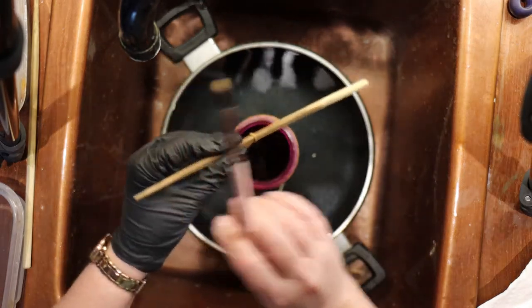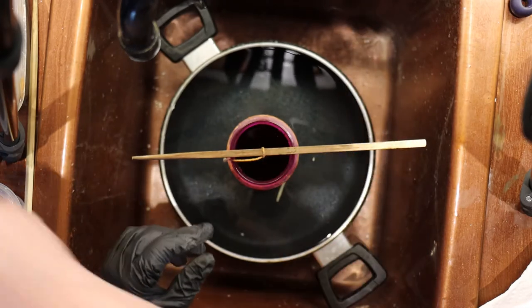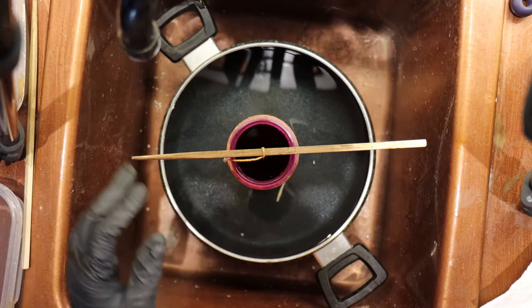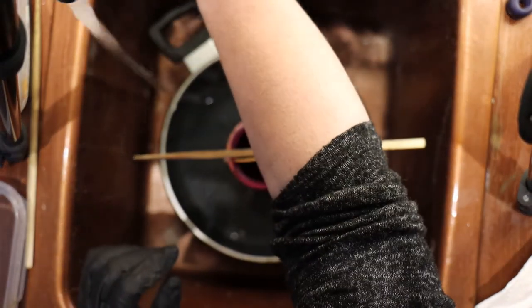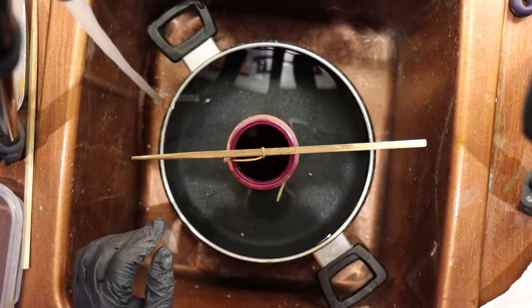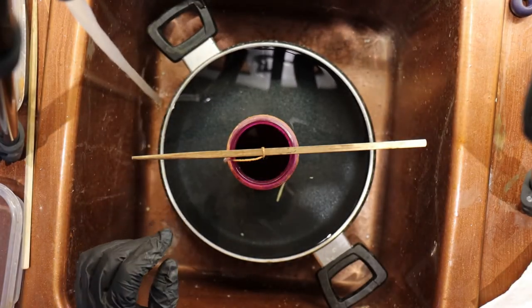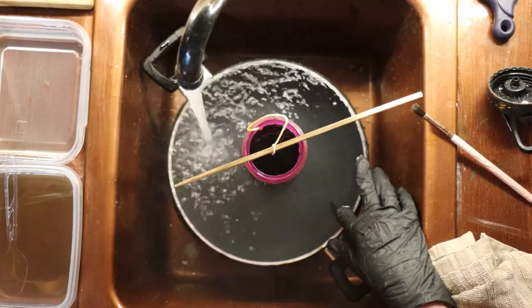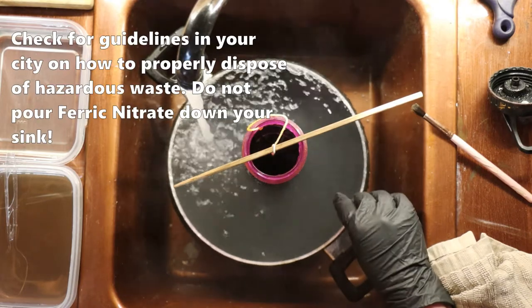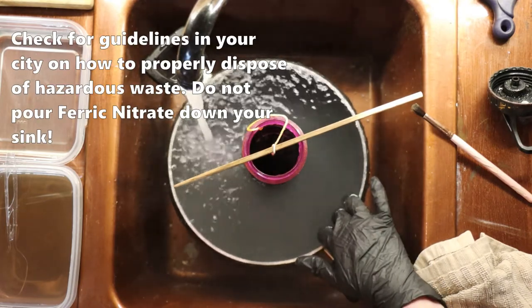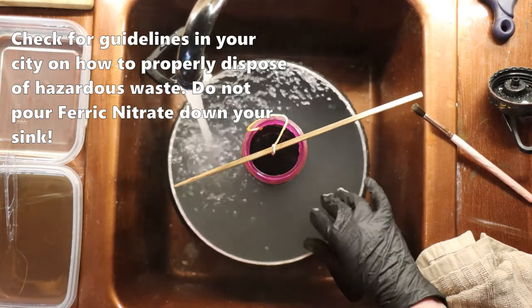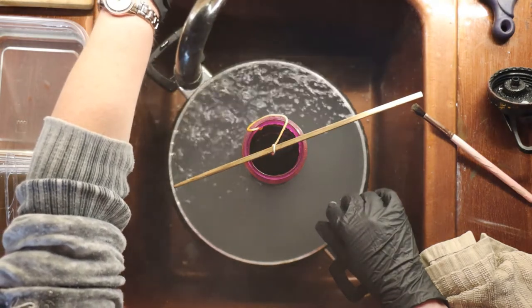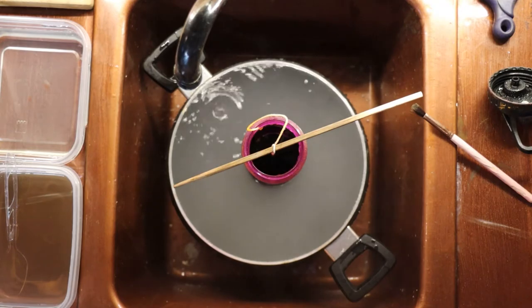You never want to dispose of the ferric nitrate solution down your sink. It is harmful to the environment, which is why we have the separate containers, so that we can place the piece and rinse out our brushes in the baking soda solution and the plain water. And we will need to dispose of those through whatever hazardous waste process your city has, but do not pour this stuff down the sink. Now we set our timer for the last 20 minutes.